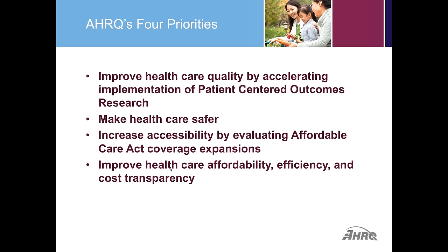Priority three is to increase accessibility by evaluating Affordable Care Act coverage expansions. This project falls under this priority, as under the Affordable Care Act, there is a directed annual wellness visit for Medicare recipients. In that annual wellness visit, when implementing a health risk appraisal or health assessment, we hope this guide will be much helpful in facilitating that. Our last priority is to improve healthcare affordability, efficiency, and cost transparency, developing and spreading evidence and tools to measure and enhance efficiency of health systems while avoiding over-utilization.